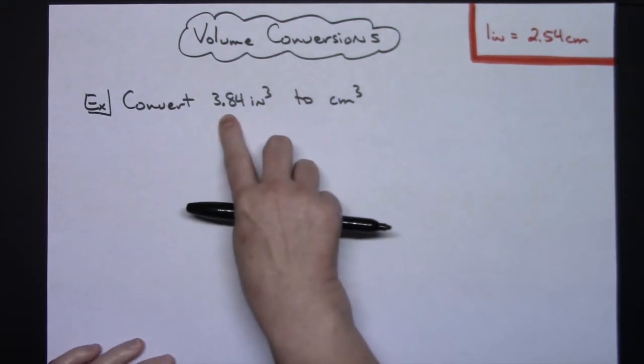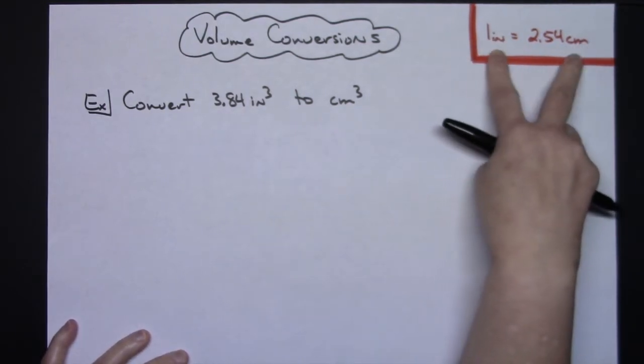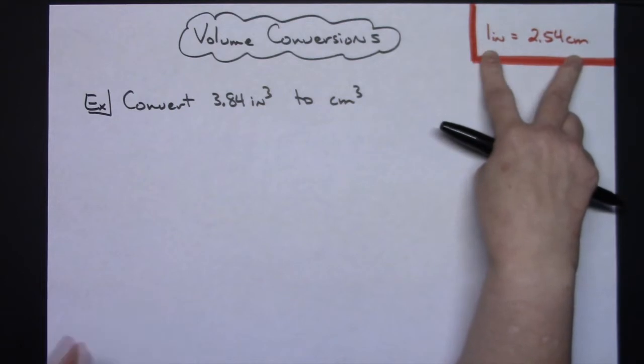All right, so I've got 3.84 cubic inches and I want to go to cubic centimeters. Well, right off the bat, assuming you can look it up or you have memorized, one inch is equal to 2.54 centimeters.